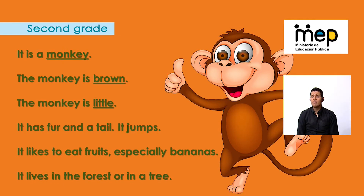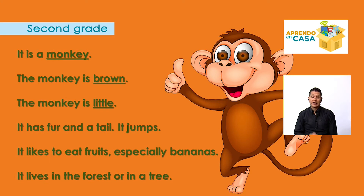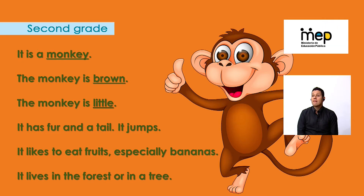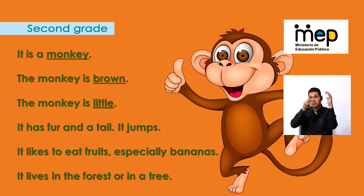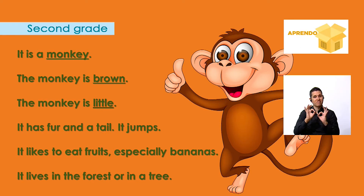I have an example — Maria, would you like to read it? It is a monkey. The monkey is brown. The monkey is little. It has fur and a tail. It jumps. It likes to eat fruit, especially bananas. And it lives in the forest or in a tree. Very good, excellent job Maria!